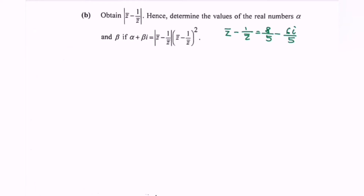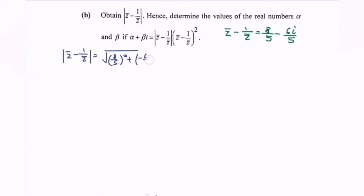Obtain the modulus of the expression. The modulus of conjugate of z minus 1 over conjugate of z equals the square root of (8 over 5) squared plus (negative 6 over 5) squared, which gives the square root of 4. So the final answer is the modulus equals 2 units.